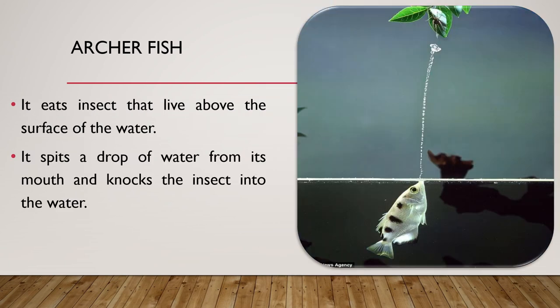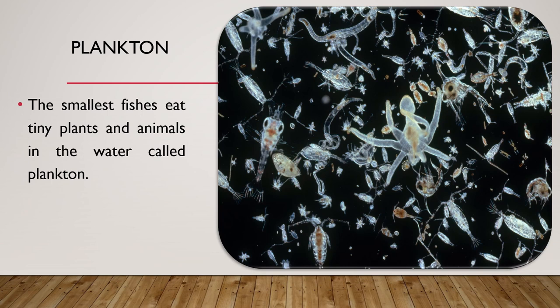Next we have the archer fish. The archer fish eats insects that live above the surface of the water. In order to reach the insect, the archer fish spits a drop of water from its mouth and knocks the insect into the water, as you can see in the picture. This fish has perfect aim every time. Some fishes that live in the dark water of caves are blind. Most fishes eat other fishes that are smaller than themselves. The smallest fishes eat tiny plants and animals in the water called plankton.